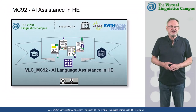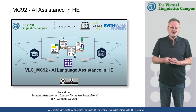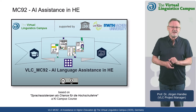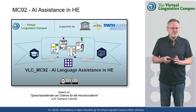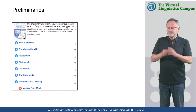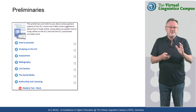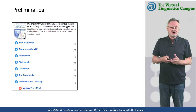Welcome to MC92, our introductory course to artificial intelligence language assistance in higher education. Like all courses on the Virtual Linguistics Campus, MC92 starts with a preliminary section where all administrative aspects of the course are explained.